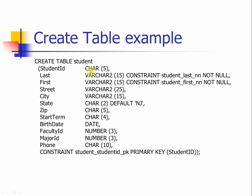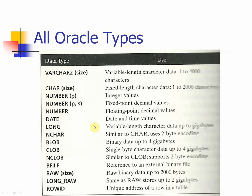Looking back at the student table creation example, you can see that most of the data types we defined have now been discussed. The DATE type is simply the date. This slide also shows other data types you can use — we have covered the most frequently used ones. Just like C++ or Java, Oracle has many different data types, but you usually use the ones that are most common. This table is not a complete list of data types available in Oracle.